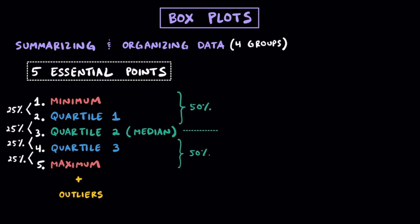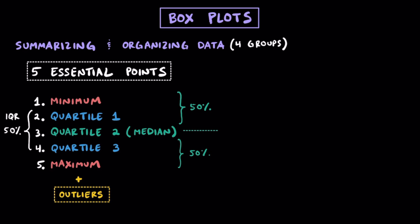Besides learning about the upper and lower 50% of a data set separated by the median, it's also going to be important to understand the middle 50% of a data set, which is the data found between quartile 1 and quartile 3, or the lower and upper quartile. The distance between quartile 1 and quartile 3 is called the IQR, or the interquartile range. The IQR lets us know the range of the middle 50% of the data centered around the median.